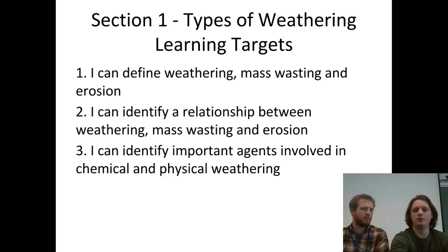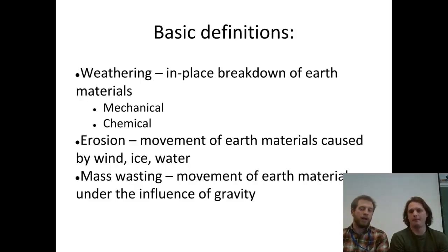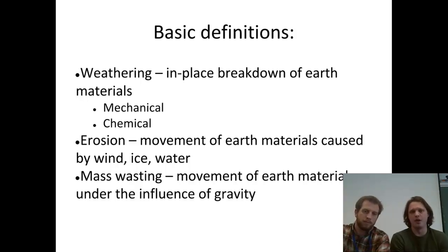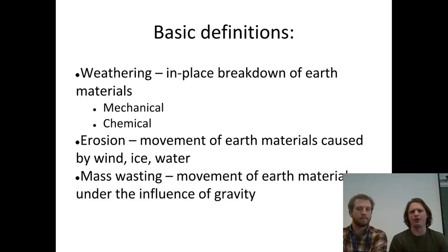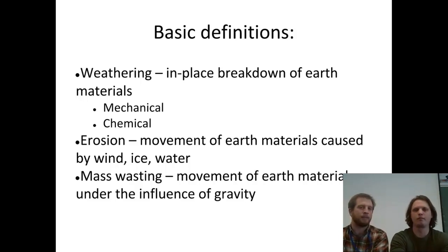We'll be talking about physical weathering for this video. So the real basic definition: weathering is just the breaking down of materials in place — we're talking about the surface of the earth. Erosion is when that broken-down material gets moved by wind, ice, or water. And then mass wasting is just moving earth materials under the influence of gravity — think of rocks falling down a hill or sand sliding down a mountain.